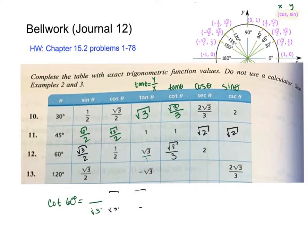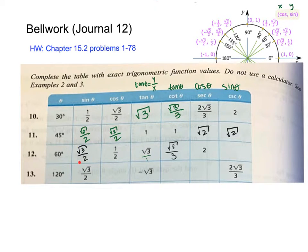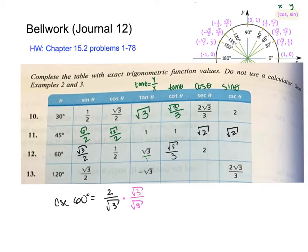Now let's look at another one. This one wants to find cosecant. Cosecant is the reciprocal of sine, so we go to sine and flip it. For cosecant of 60 degrees, if I flip it, that's 2 over square root of 3. But I have a root in the bottom, so I multiply top and bottom by square root of 3. The bottom is now 3, and the top is 2 square root of 3. I can't simplify the 2 and the 3, so that is my answer.